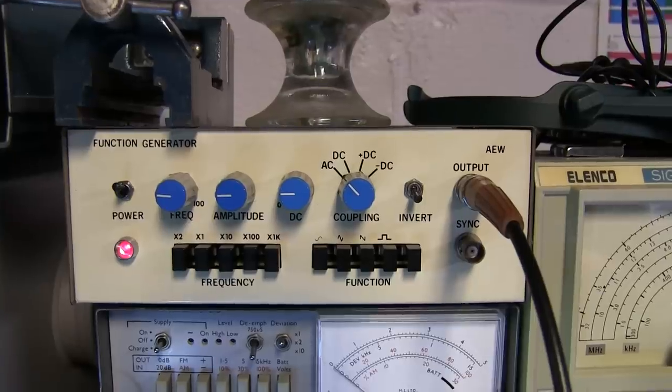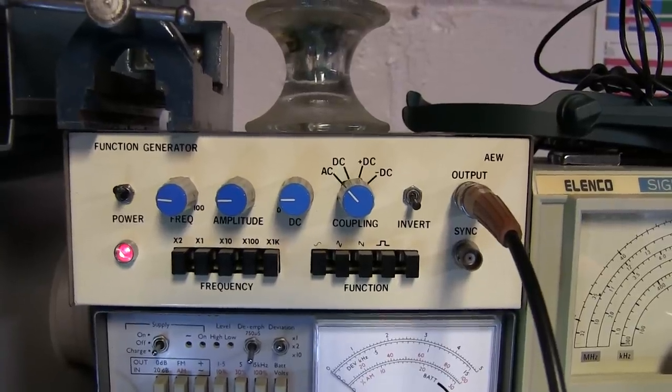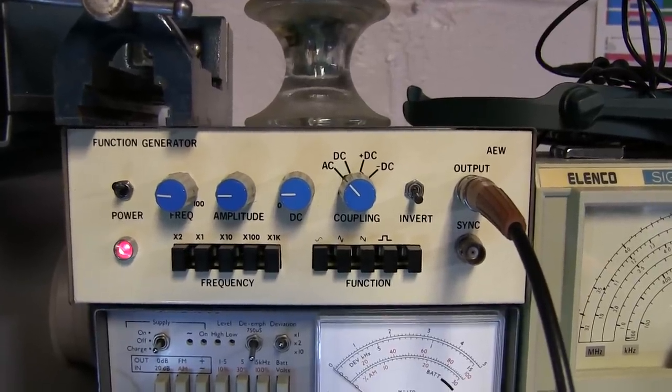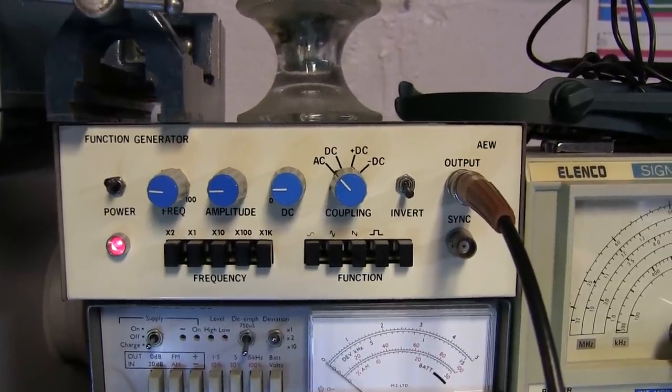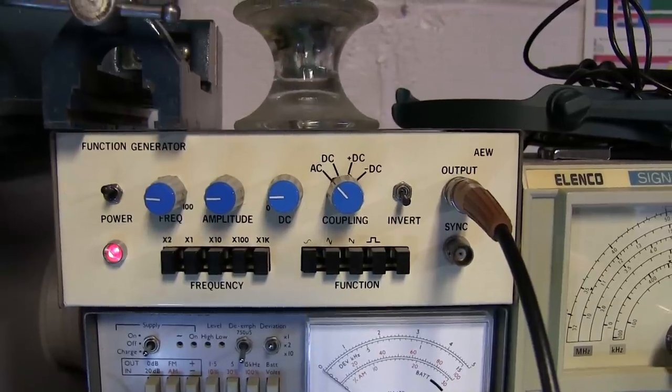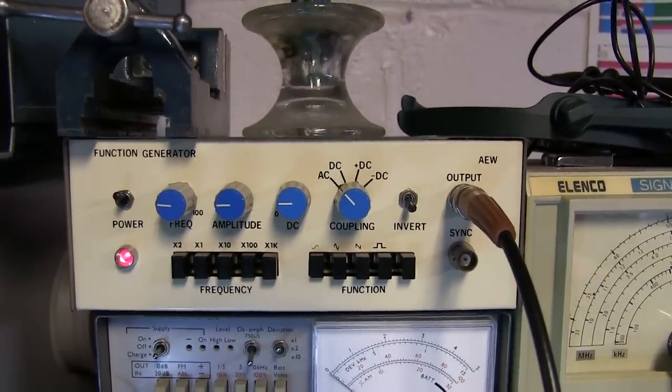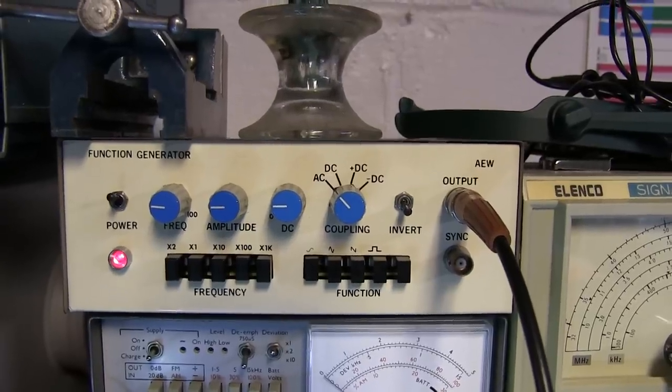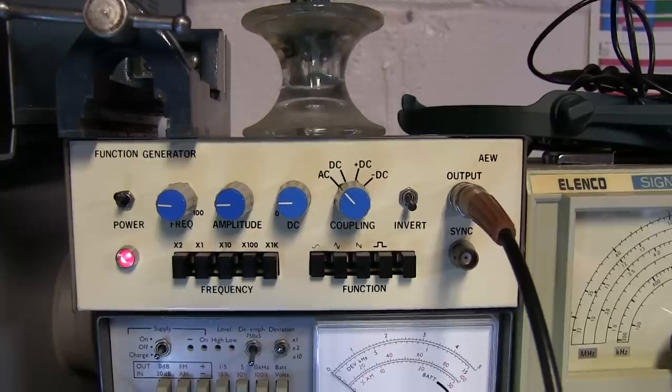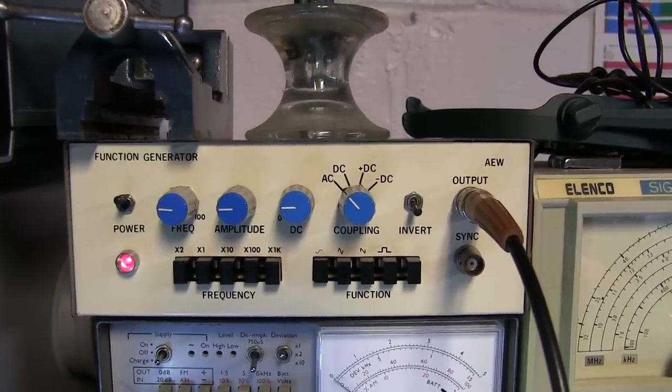So I've got the generator set up to generate a relatively low frequency about two kilohertz or so. And that's kind of important because we want to ensure we're operating at a low enough frequency that we don't have to worry about reflections on a 50 ohm cable or anything like that.